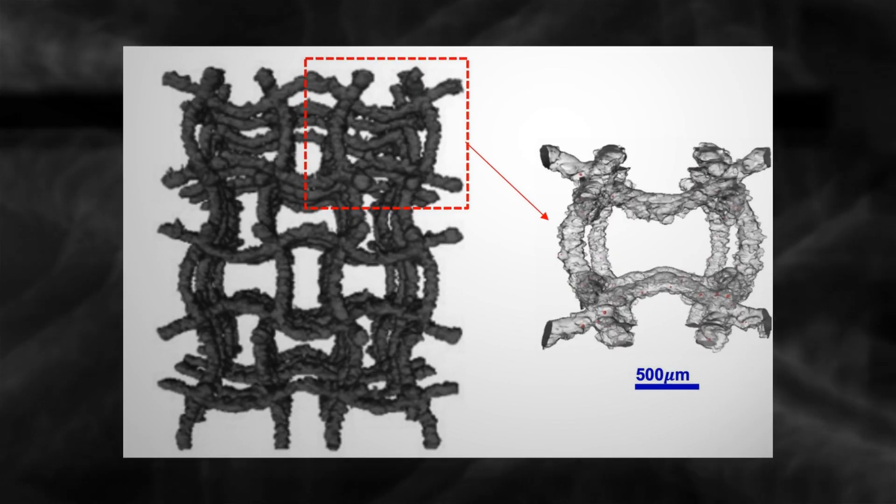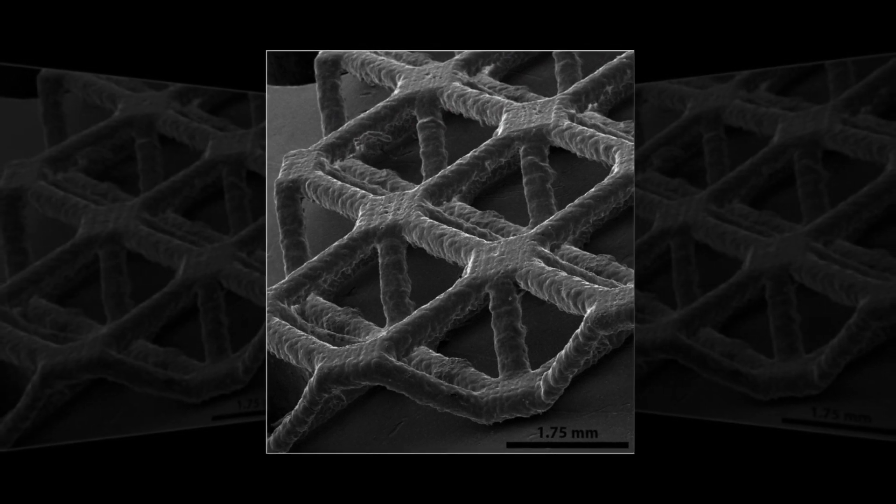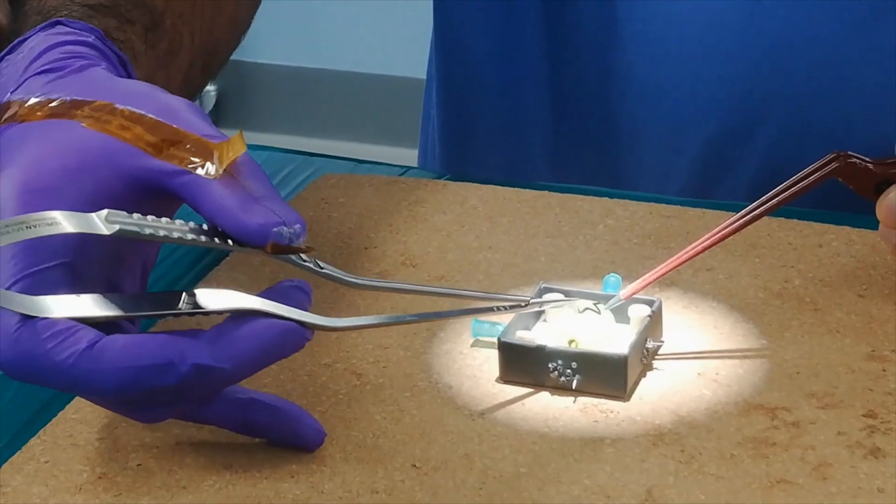Simply put, nanoscale engineering is engineering at a very small scale. We are talking about engineering things that are between one thousandth of a human hair to one hundred thousandth of a human hair. The fundamentals of nanoscale engineering is about looking at how the properties of materials change at nanoscale.